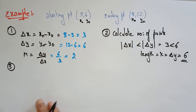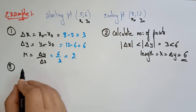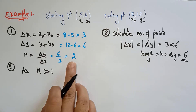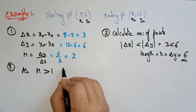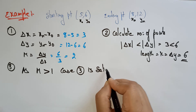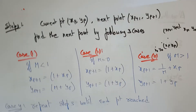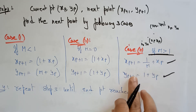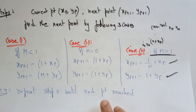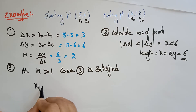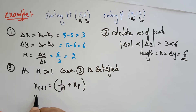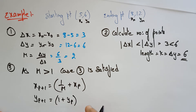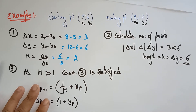Step 3: Since m equals 2, which is greater than 1, case 3 is satisfied. To find the next coordinates, use: xp+1 = (1/m) + xp, and yp+1 = 1 + yp. We'll build a table starting with x0 = 5, y0 = 6, computing xp+1 and yp+1, then rounding to integer values.